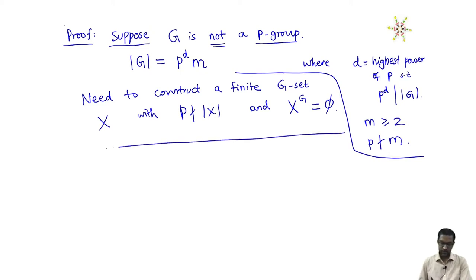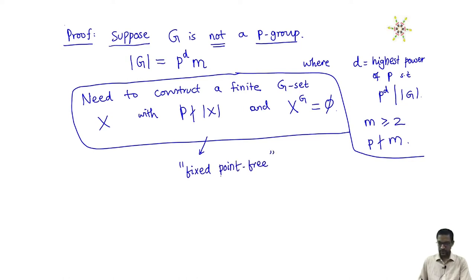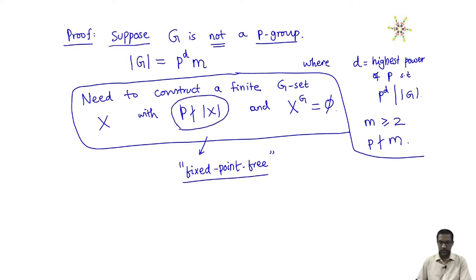This is what we need to do to complete the proof: construct a finite G-set X with p not dividing its cardinality and such that there are no fixed points. If I can do this, I obtain a contradiction and the proof is complete. So if G is not a p-group, I need to construct a fixed-point-free action of G on some set X.